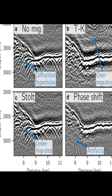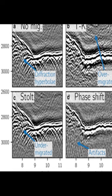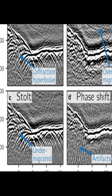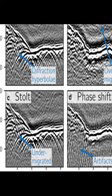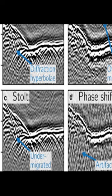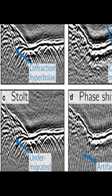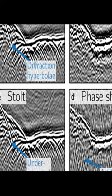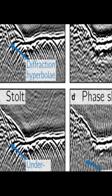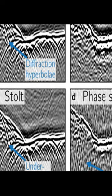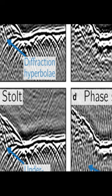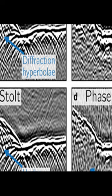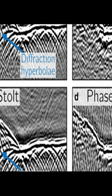Two datasets were used to demonstrate the capabilities of ImpDAR: deep, 3000m depth data collected with a custom 3MHz system in northeast Greenland, and shallow, 100m depth, 500MHz data collected with a commercial GPR on South Cascade Glacier in Washington.